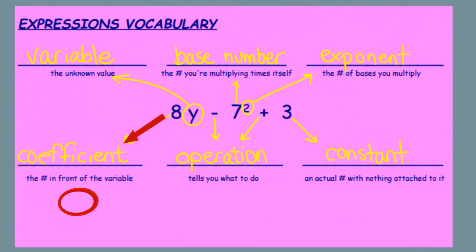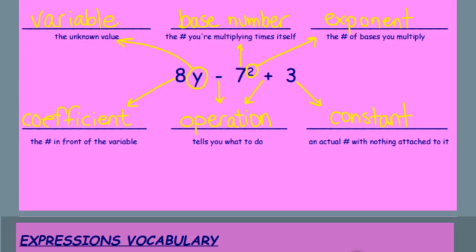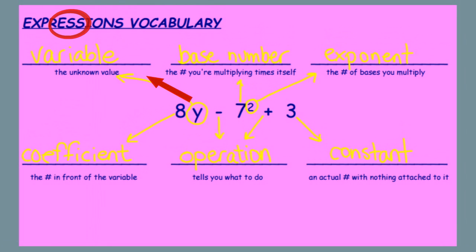The coefficient is the number in front of the variable. The variable is the unknown value that you are solving for.